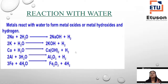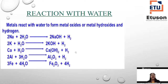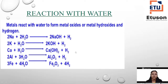So we will study this with examples in detail. When a metal reacts with water, the products are metal oxides or metal hydroxides, and hydrogen gas is also evolved. You have to remember three things: either metal oxide or metal hydroxide is formed, along with hydrogen gas.